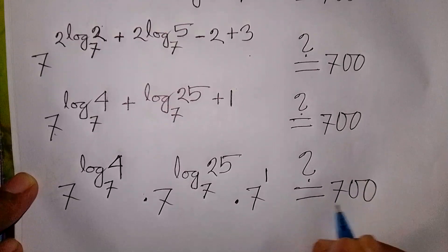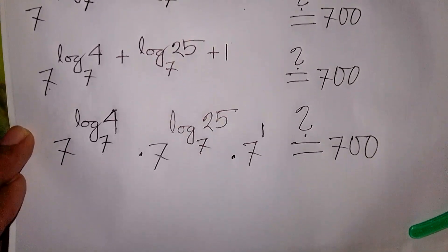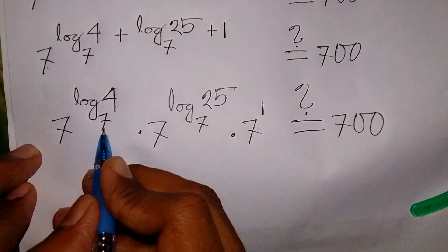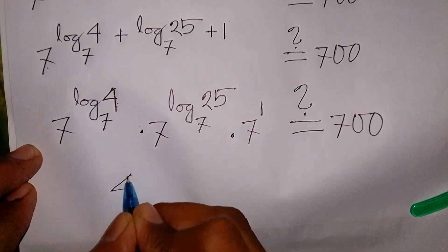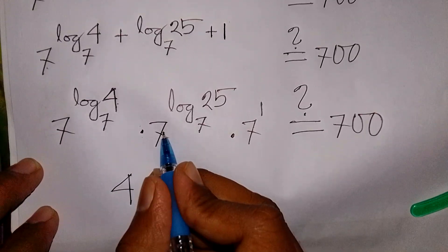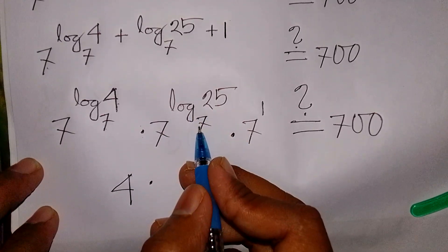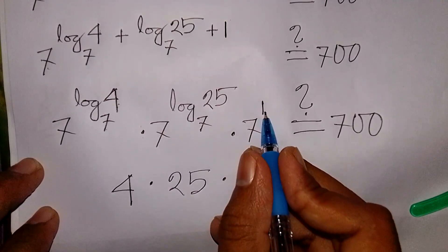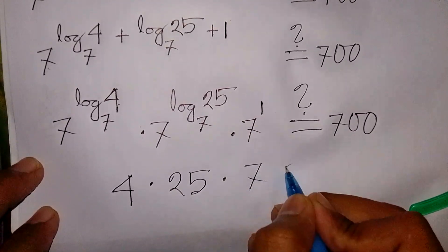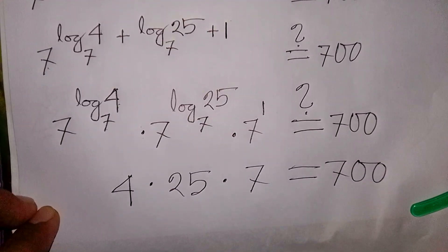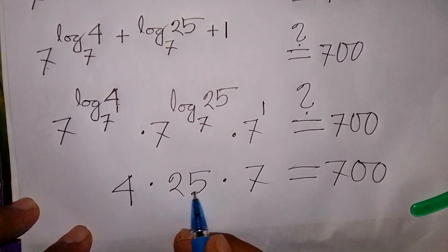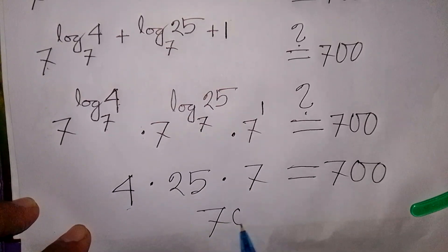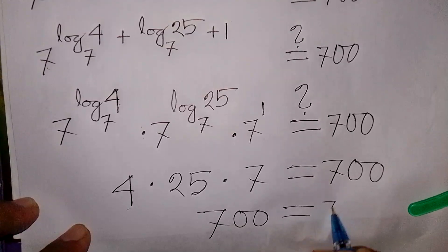Is it equal to 700? Now, 7 to the power of log 4 base 7 equals 4, and 7 to the power of log 25 base 7 equals 25. So we have 4 times 25 times 7 to the power 1. Since 4 times 25 equals 100, and 100 times 7 equals 700, the equation is verified and equals 700.